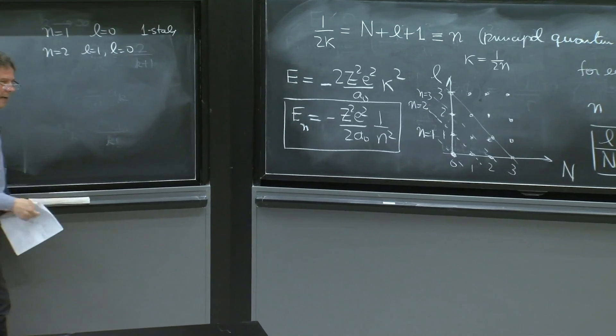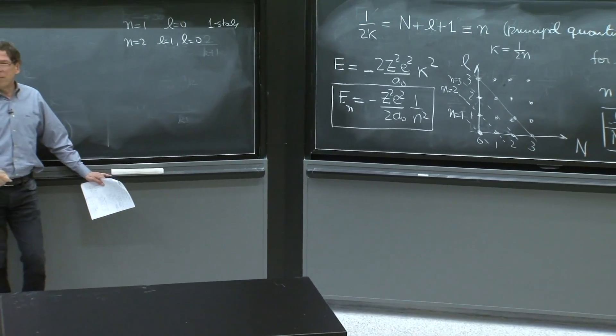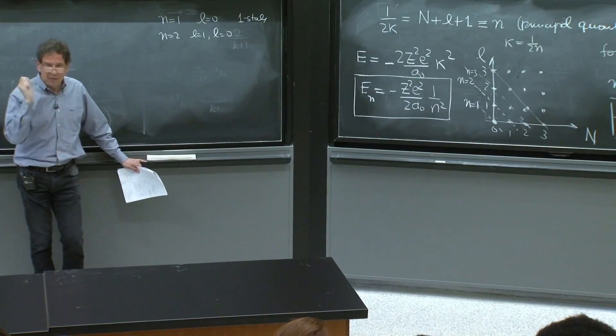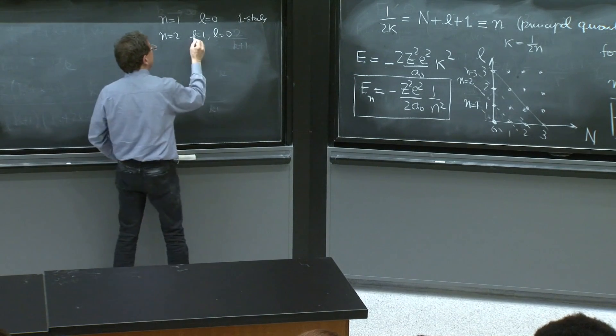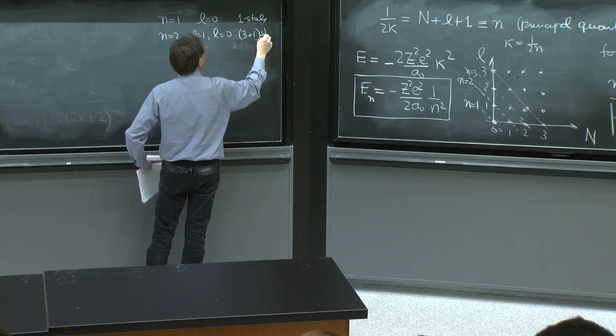Well, l equals 1 can have m equals 1, 0, and minus 1. Remember, the m value is another label for states. Those are different states. So here there are three states plus one state. Three plus one states. That's 4.